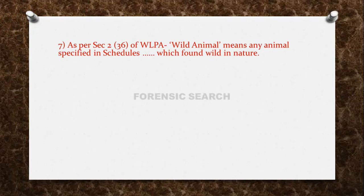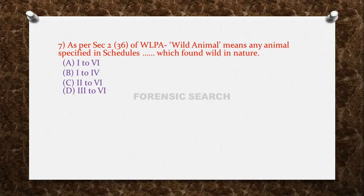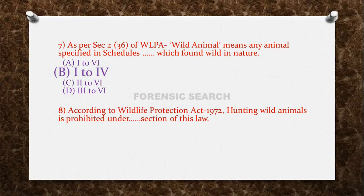Question 7: As per Section 2, subsection 36 of the Wildlife Protection Act, wild animals means any animal specified in which schedules found wild in nature? Option A: Schedule 1 to 6, Option B: Schedule 1 to 4, Option C: Schedule 2 to 6, Option D: Schedule 3 to 6. The correct answer is Option B — Schedule 1 to Schedule 4.